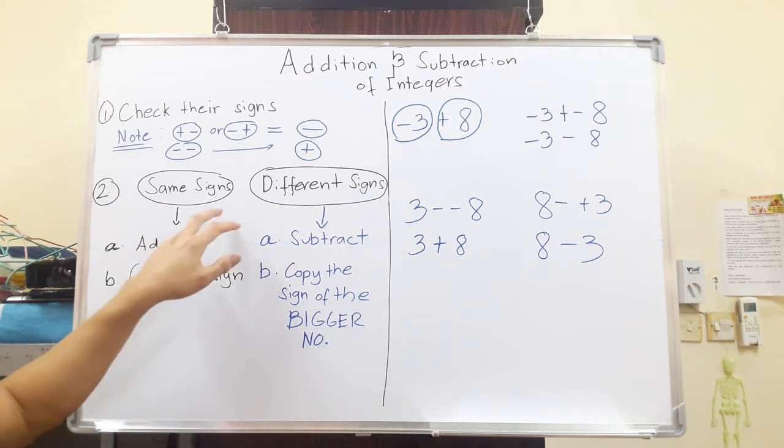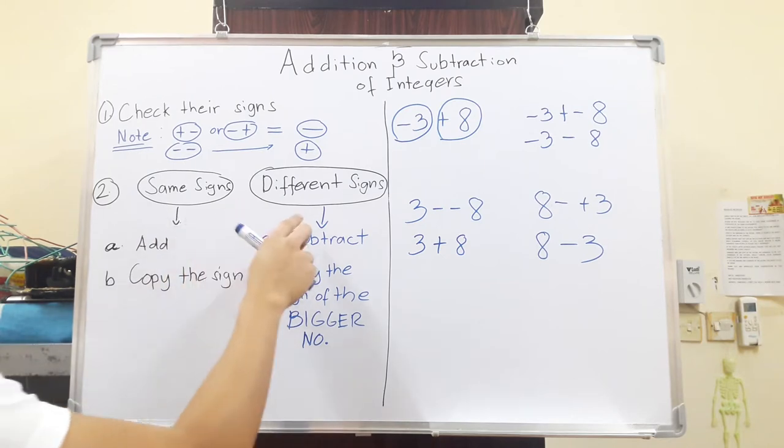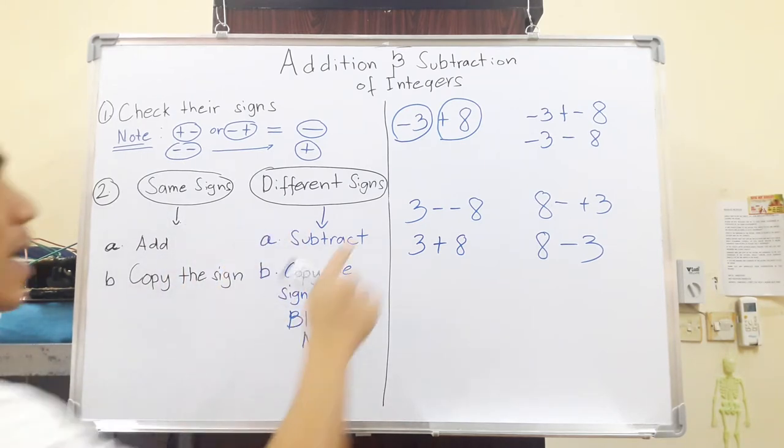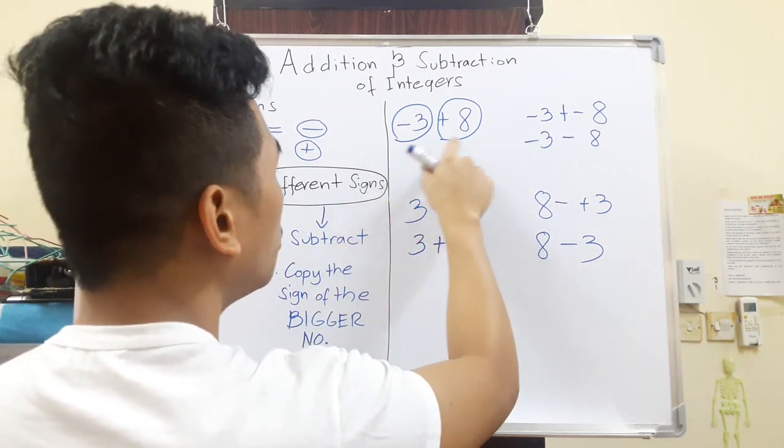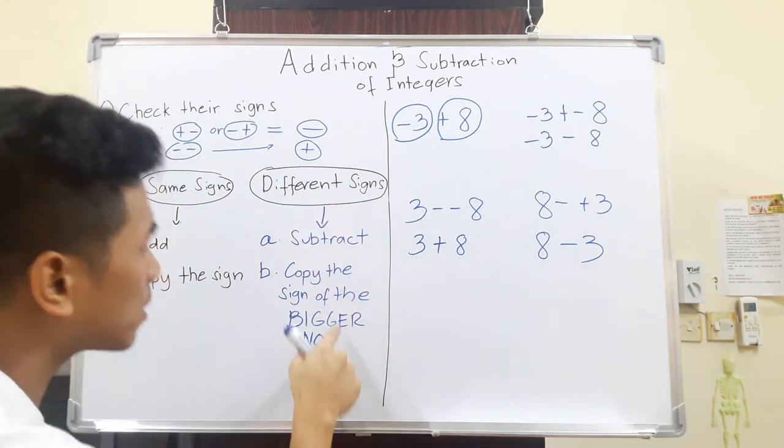Next, check the sign and the number. Check if they have the same sign or different signs. Now for example here, what do we have? We have two numbers with different signs. So we are going to follow these steps on this sign.